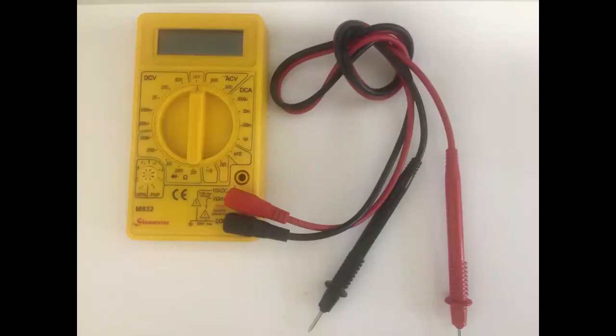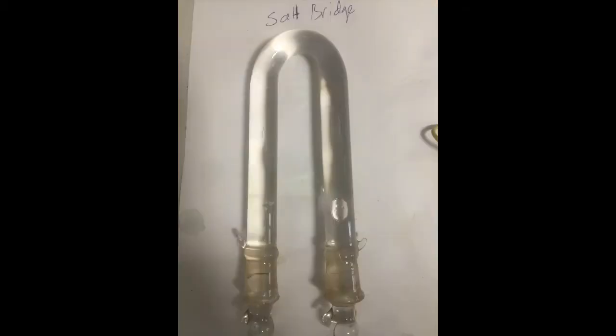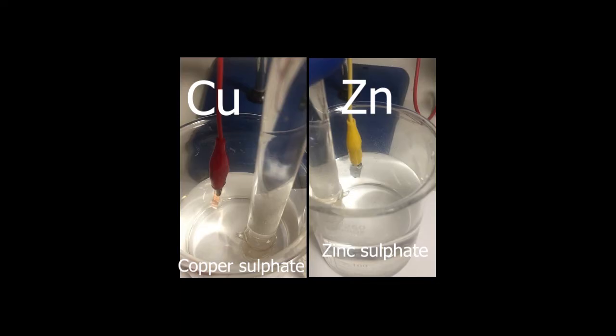Now let's see the redox reaction between zinc and copper metal. First of all, I need some materials: one digital multimeter for measuring potential, two copper and zinc sheets, salt bridge, zinc sulfate solution and copper sulfate solution 0.5 molar.